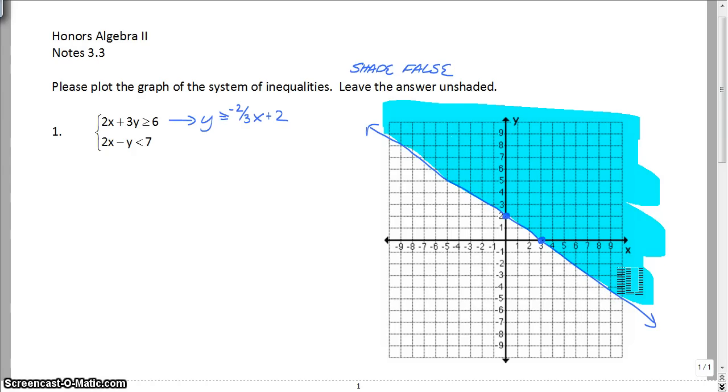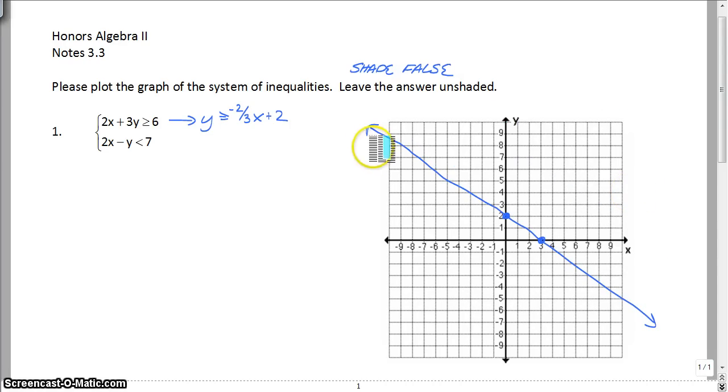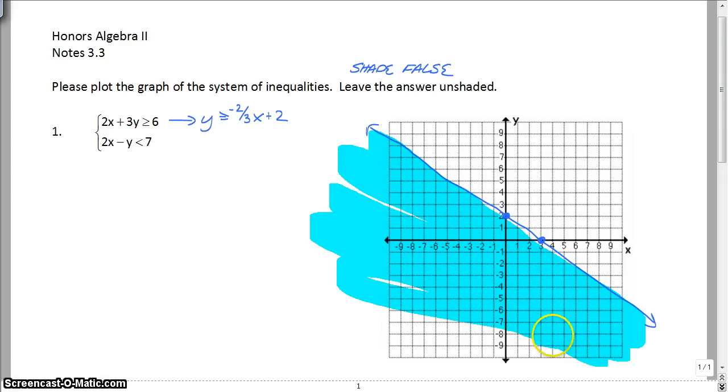Okay, so, but for the purpose of these notes, like I said, we are going to shade false. We are going to shade in the opposite direction. So that's the confusing part. And like I said, once you see an example done where we have three or four, it'll make a little bit more sense.